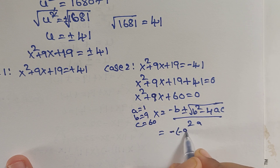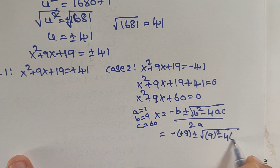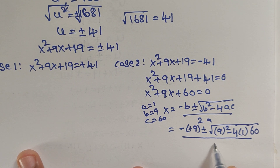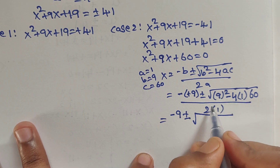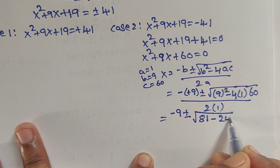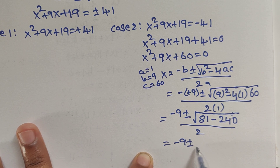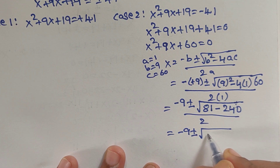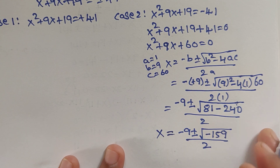Substituting into the quadratic formula: x = (−9 ± √(81 − 240)) / 2 = (−9 ± √(−159)) / 2. Since the discriminant is negative (81 − 240 = −159), Case 2 gives no real solutions.